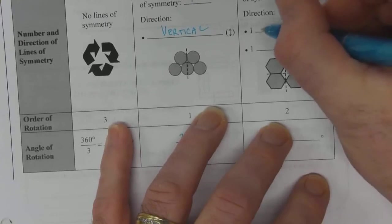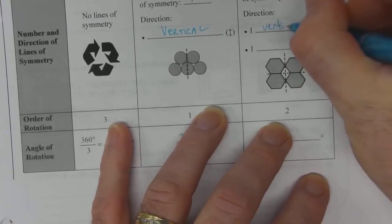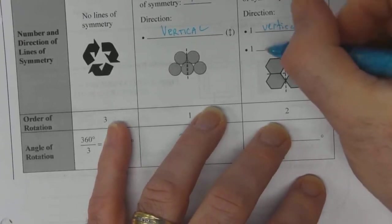All right, so we've got two lines of symmetry: one vertical, one horizontal.